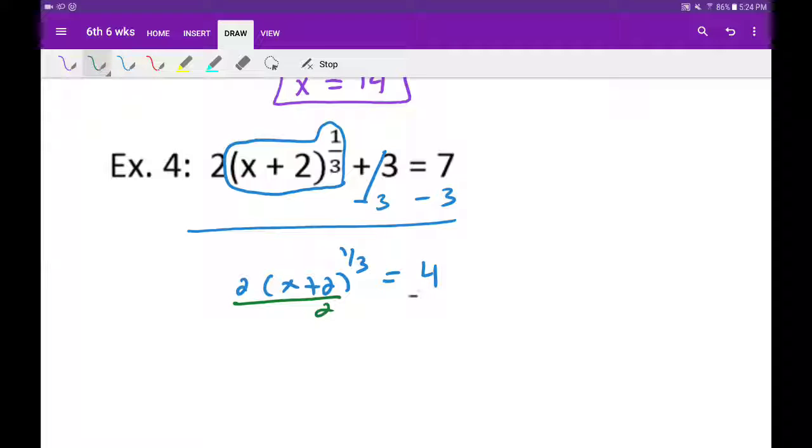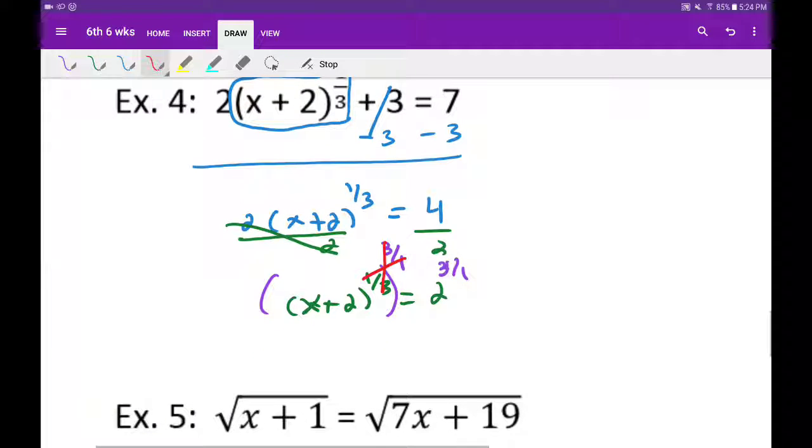Now I want to divide out the 2. So (x + 2) to the 1/3 power equals 2. I'm now going to take the reciprocal power, 3 over 1, which is basically just 3. We're going to basically cube it. Alright, so same principle, those are going to cancel. And we're going to get x + 2 equals 8. Okay, so we're not done yet, minus the 2 now. And we're going to get x equal to 6.